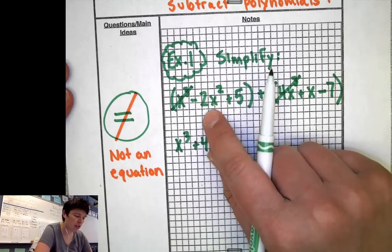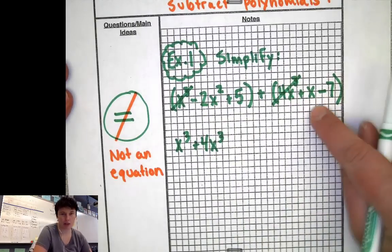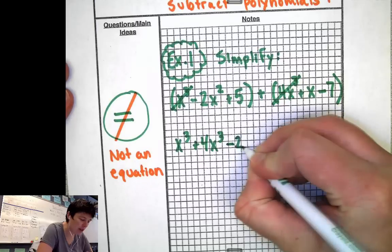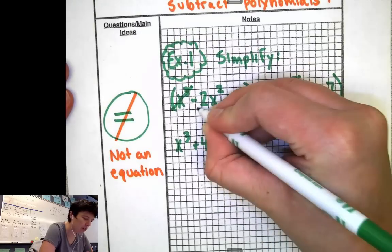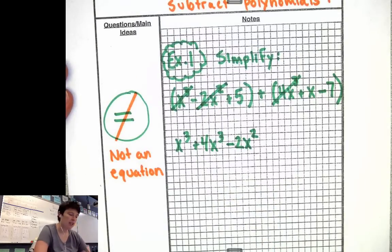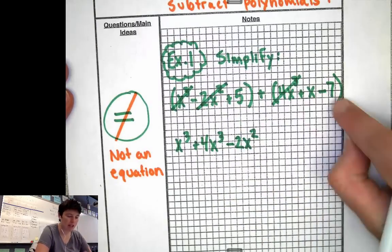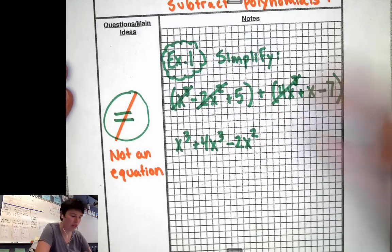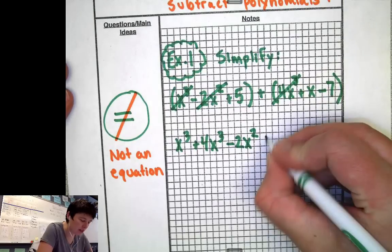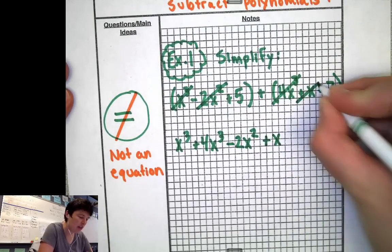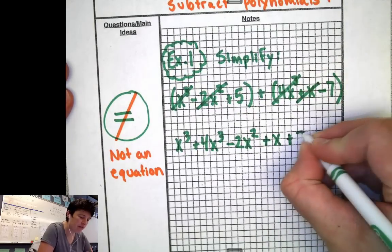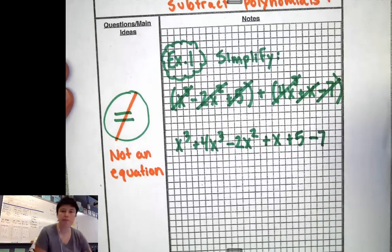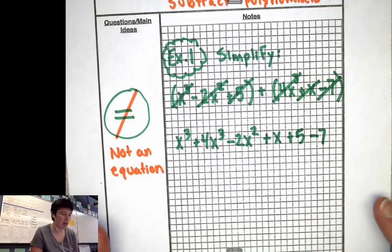Then I see a minus 2x squared, but I don't see any x squareds over here to match with it, so the minus 2x squared is on its own. I see a plus 5 and a minus 7 — those will go together. I also see this plus x that has nothing to go with it, so I'll put the plus x right here. And then I'm going to put the plus 5, cross it out, and the minus 7, cross it out. Now I've used all of my parts.